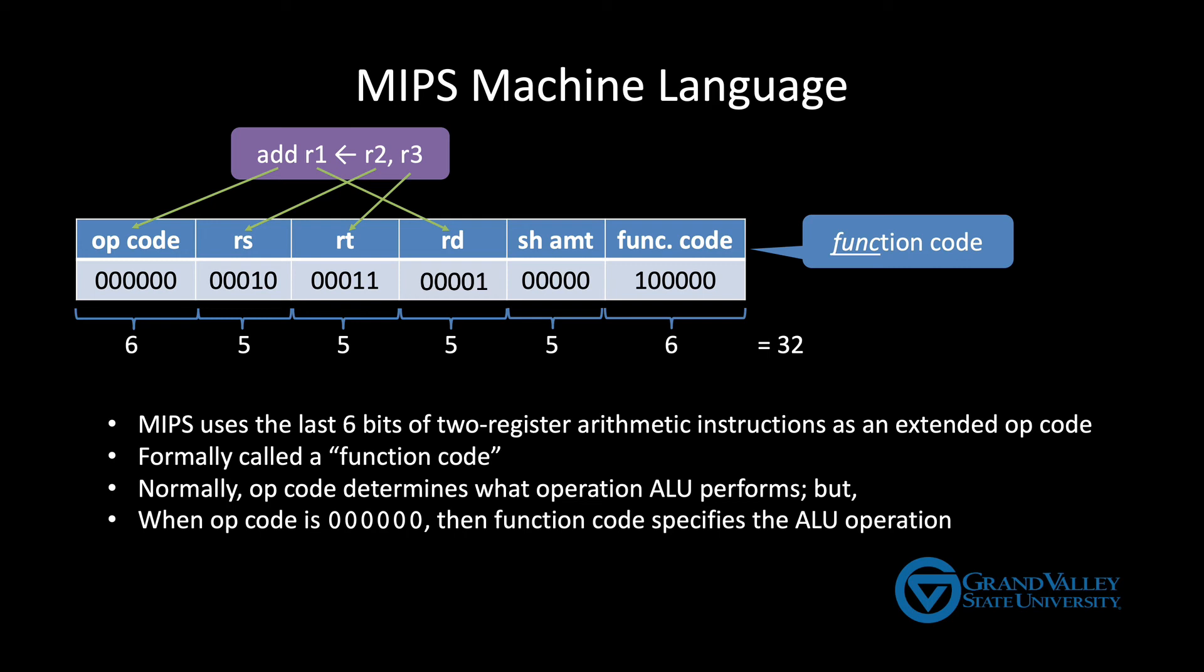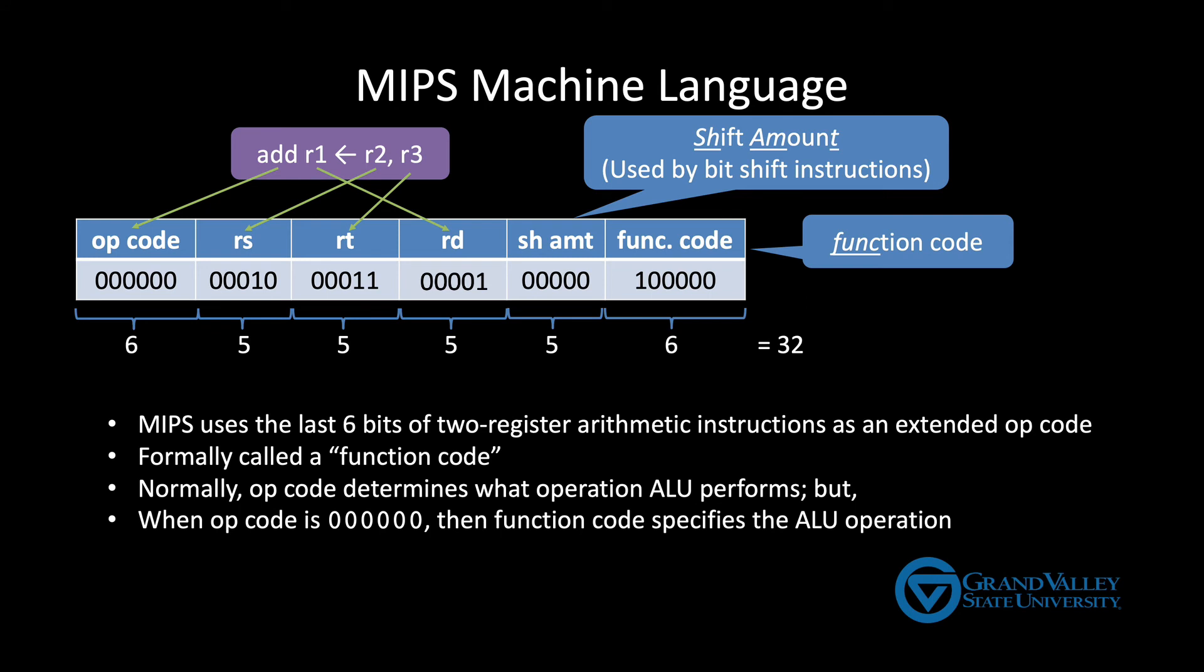Also, let me mention quickly that the last five bits we haven't mentioned yet are the shift amount. They're used by bit shift instructions. So, MIPS machine instructions that use this pattern, an opcode, three registers, a shift amount, and a function code, are called R-type or register type instructions. We'll introduce other instruction formats in future videos.